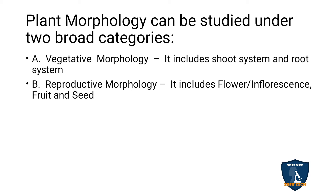Vegetative morphology deals with the stem, root and leaves — which is shortly known as shoot system and root system. Reproductive morphology means flower or inflorescence, fruit and seed. So, we are going to discuss about the vegetative morphology.